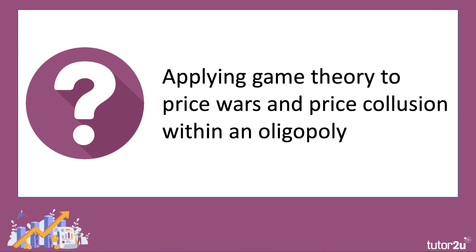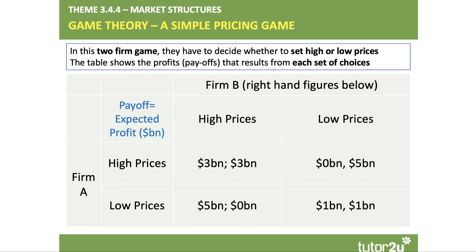A-star students apply game theory to price wars and collusion within an oligopoly. Here is a simple two-firm, two-price model based on the Prisoner's Dilemma. Both firms A and B must decide whether to set high or low prices, and a payoff matrix shows expected profits — firm A is always the left-hand figure and firm B the right. If both set high prices, both make $3 billion profit. If both set low prices, each makes $1 billion. If firm A sets a high price and firm B sets a low price, firm A breaks even at zero profit while firm B makes $5 billion.